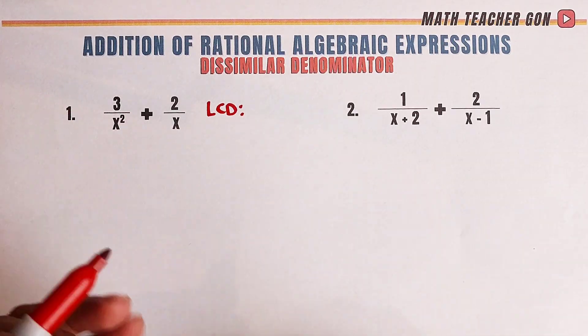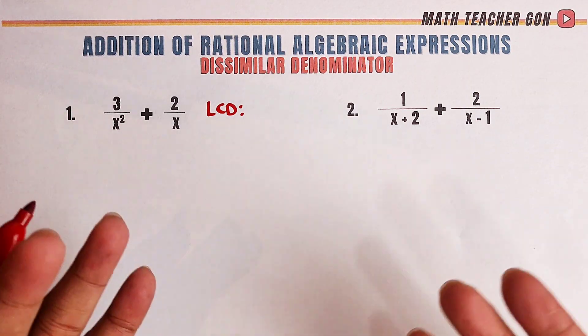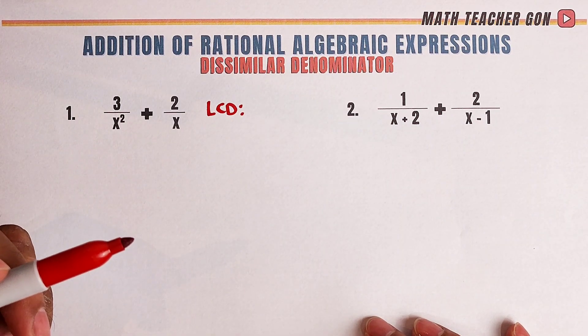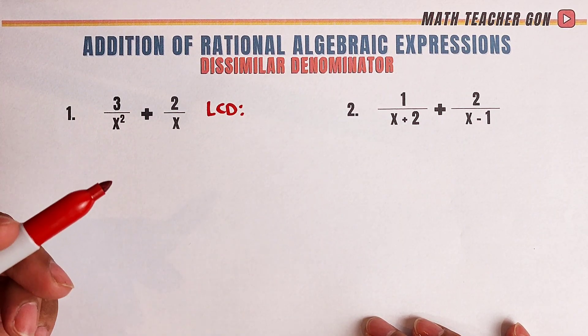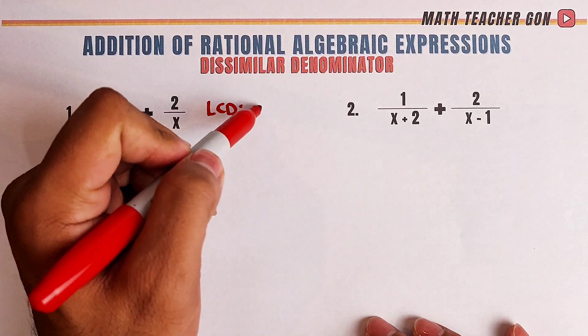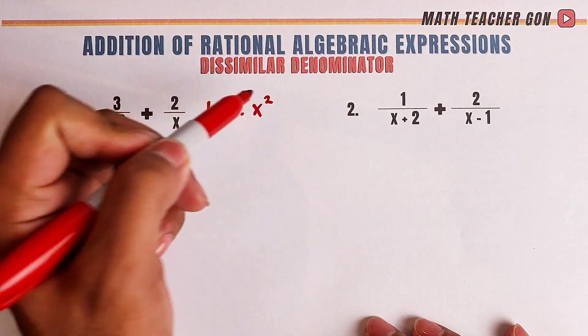So, if they are the same variable and a monomial, the LCD will be the variable with the highest exponent. So without wasting time, automatically the LCD is x squared.